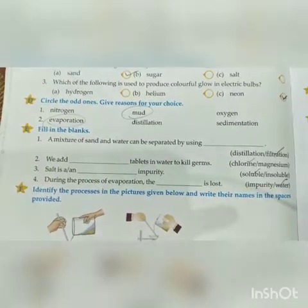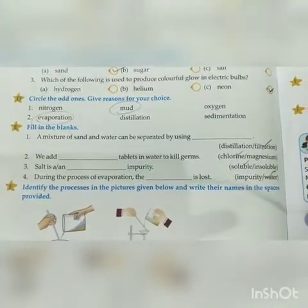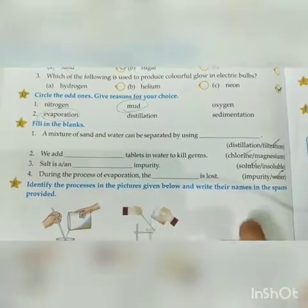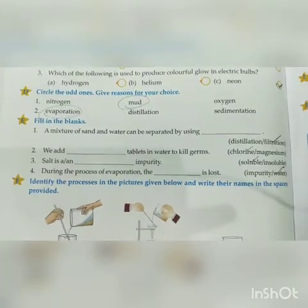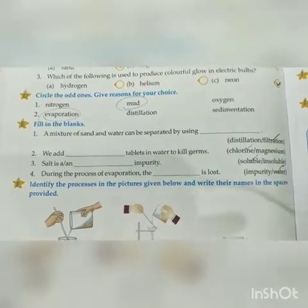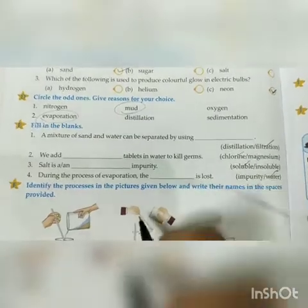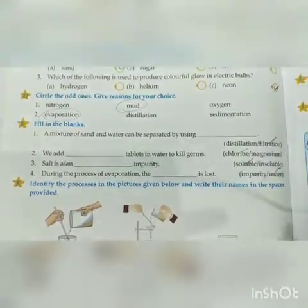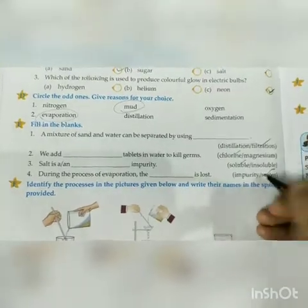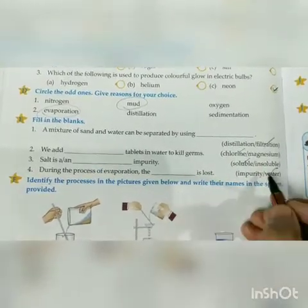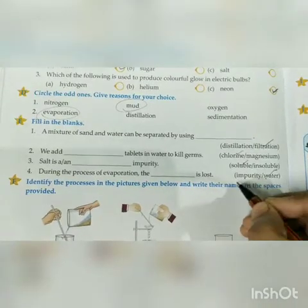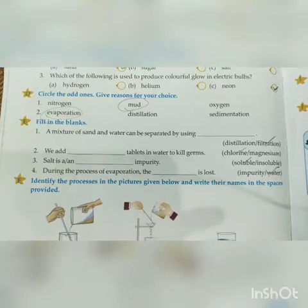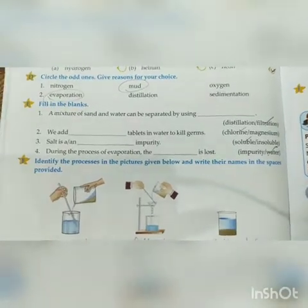Fourth: During the process of evaporation, the dash is lost. In the evaporation process, when we have a mixture of water and impurity, what happens is that water evaporates and is lost into the atmosphere. So the answer is Water — water is lost during evaporation, and the impurity remains behind.